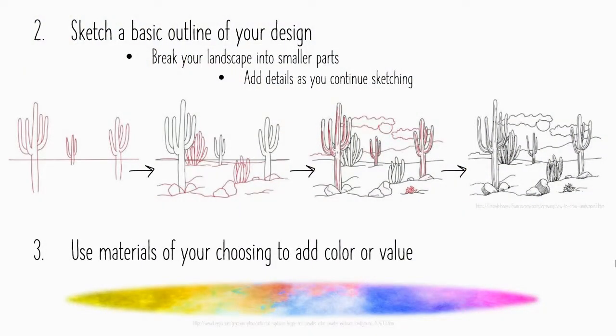Your second step would be to sketch a basic outline of your design. Try to break down your landscape into smaller parts, then add details as you continue sketching. Don't start with everything all at once — look for the main important features and then continue to add on. Next, use materials of your choosing to add color or value. If you don't have access to color, you could use shading to show high contrast between different areas. But try to find color to stick with that Fauvist style.